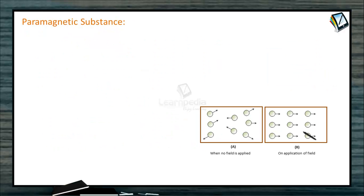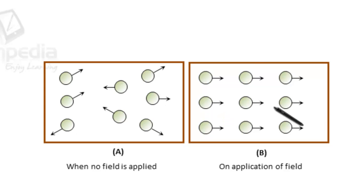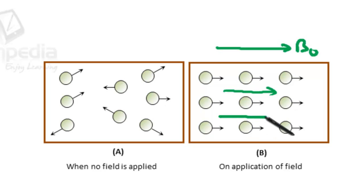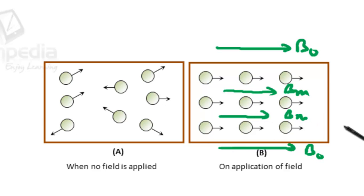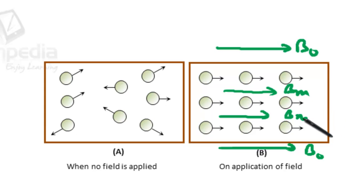The second type is paramagnetic material. Consider a material whose individual atoms have a net magnetic moment. When such a material is placed in a magnetic field, an extra magnetic field is produced in the material in the direction of the applied field. Thus, the resultant magnetic field in the material is greater than the applied field. This tendency to increase the magnetic field due to magnetization of the material is called paramagnetism, and the material is called a paramagnetic material.